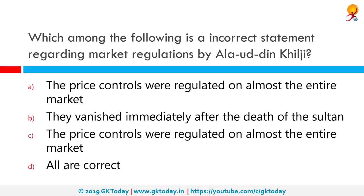Which among the following is an incorrect statement regarding market regulations by Alauddin Khilji? The correct answer is all of these are correct. The market reforms of Alauddin Khilji were one of the most effective and far-reaching economic regulations of the Sultanate period, extending to both rural and urban markets. Price controls were regulated across almost the entire market, though they vanished immediately after the sultan's death.